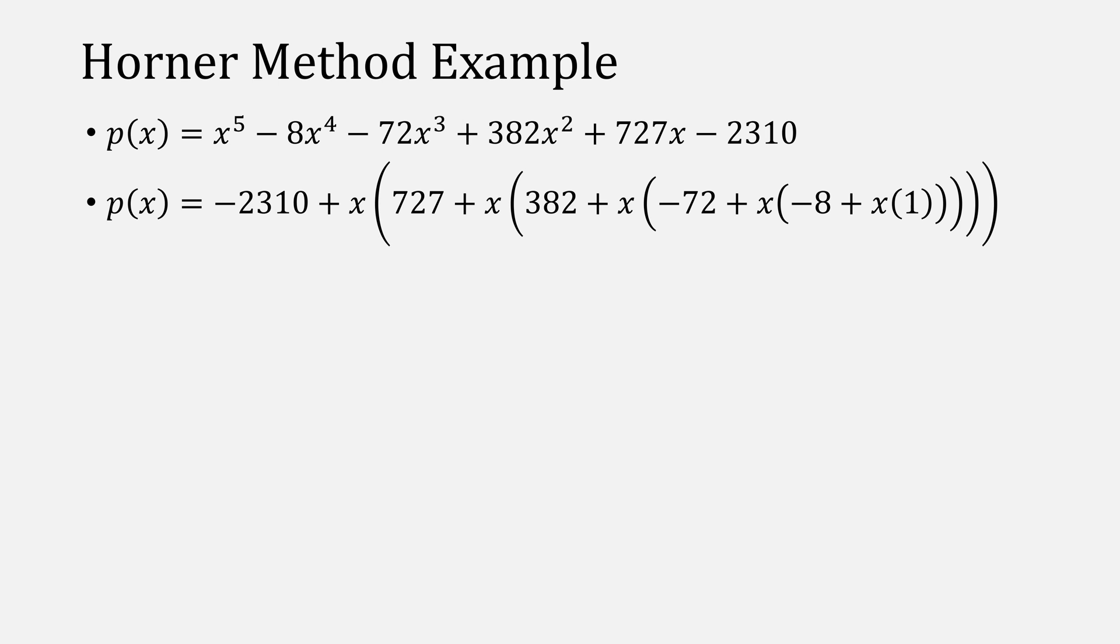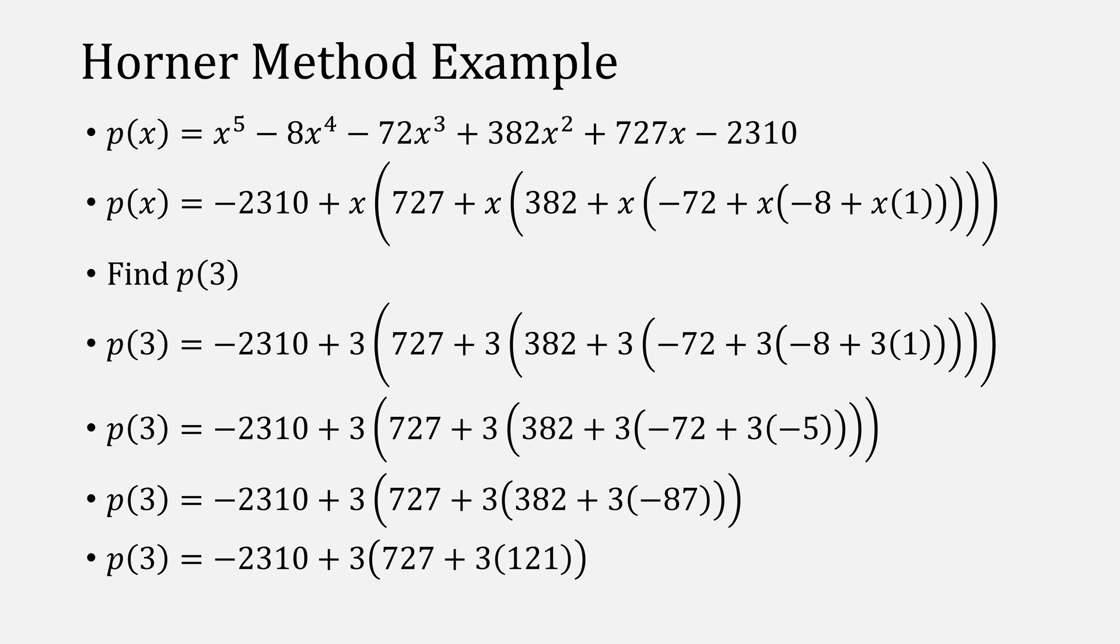Let's look at an example of this rewrite and evaluation process. If we take this polynomial, we'll first rewrite it. Then if we want to evaluate the polynomial at, say, three, we'll simply plug in three where we had x's. Then we start evaluating the polynomial. For this example, p of three is equal to 960.